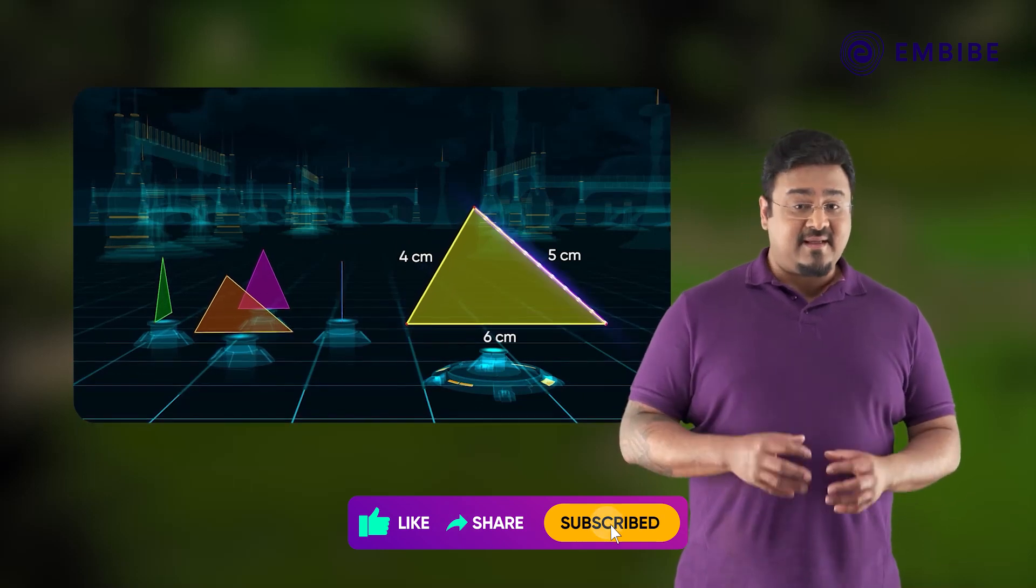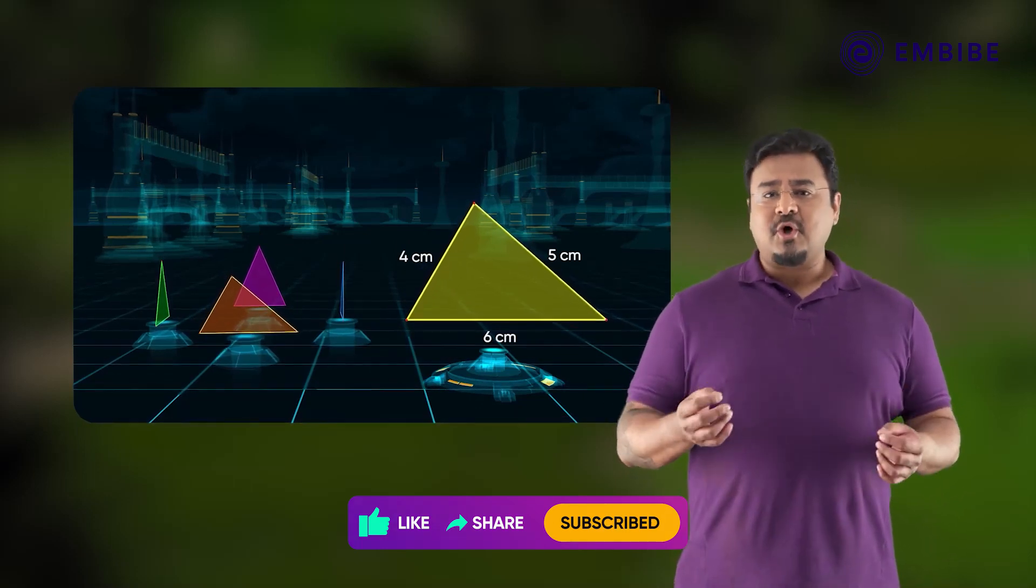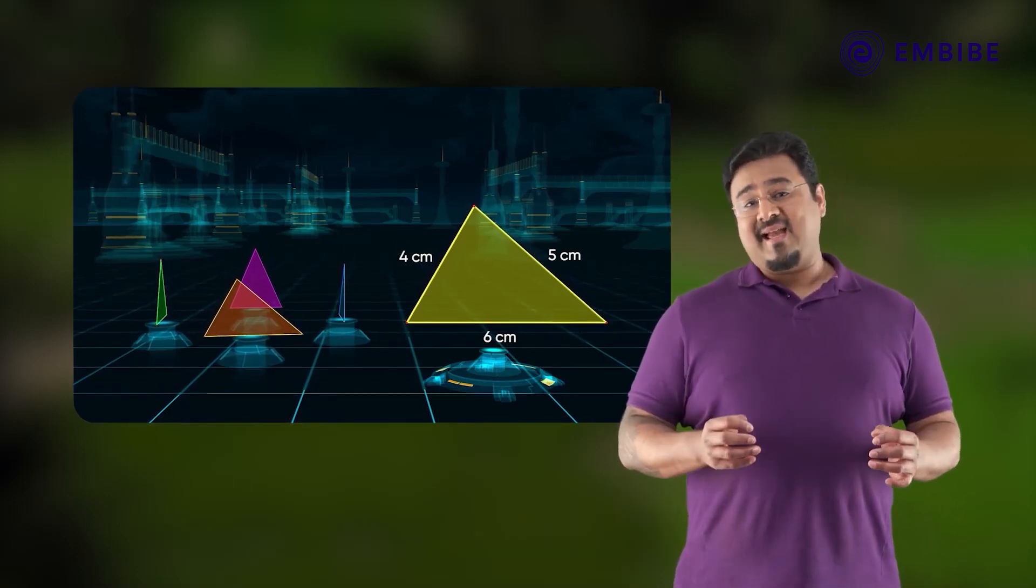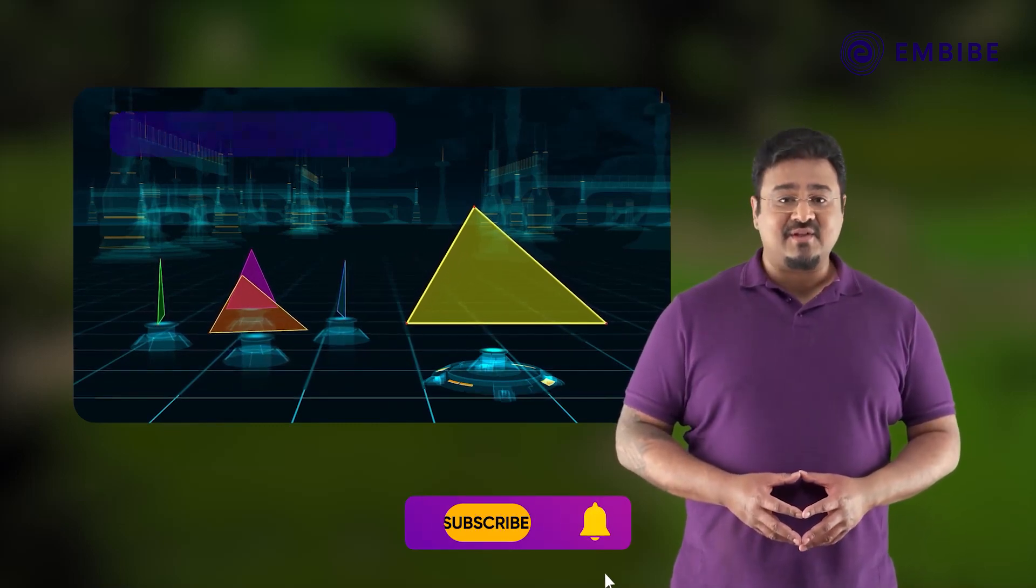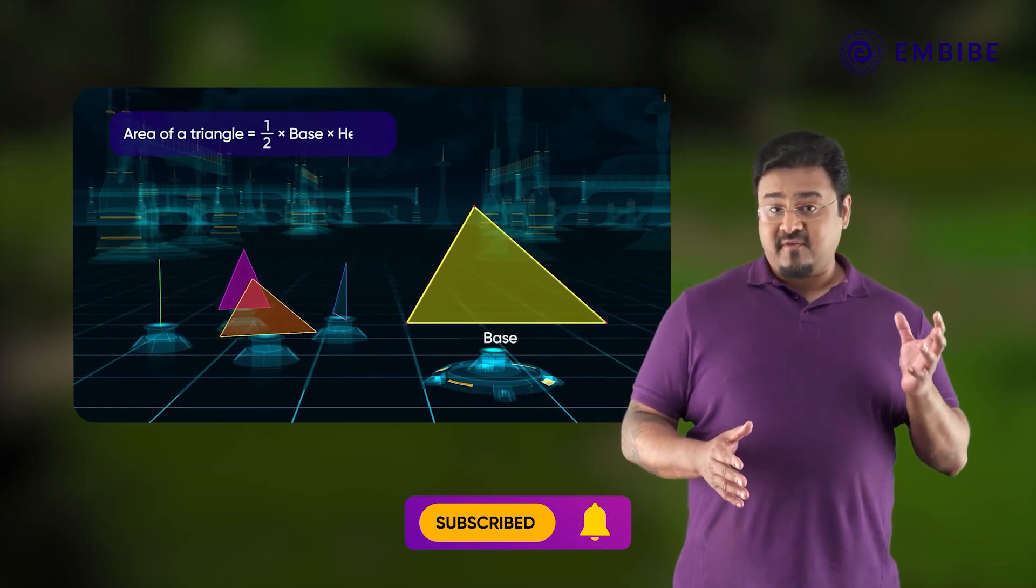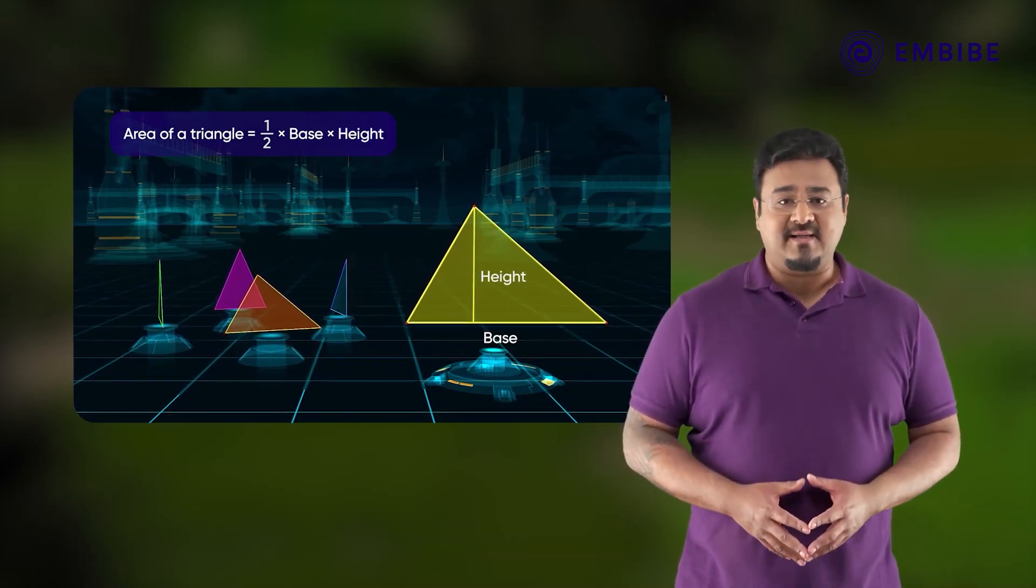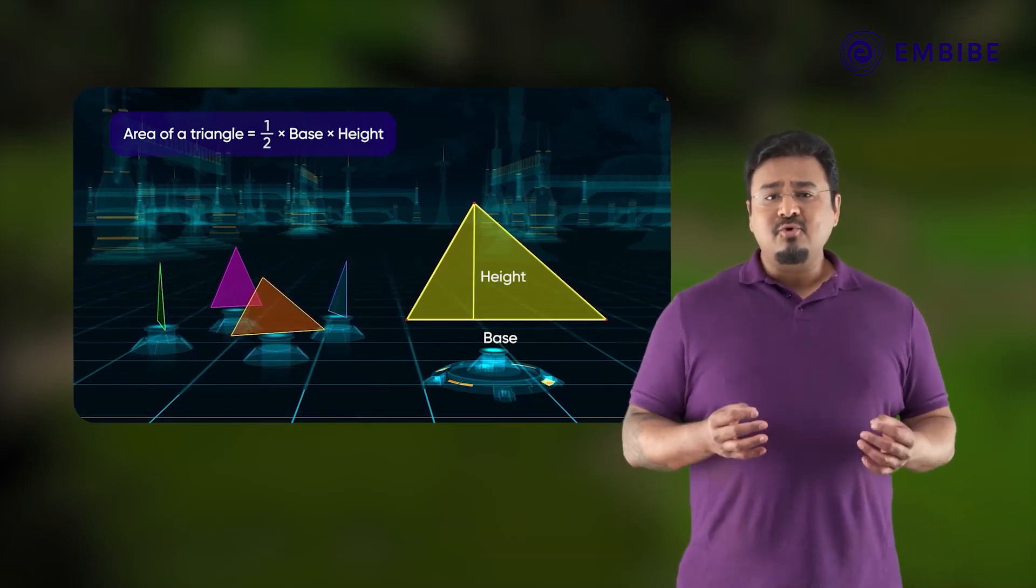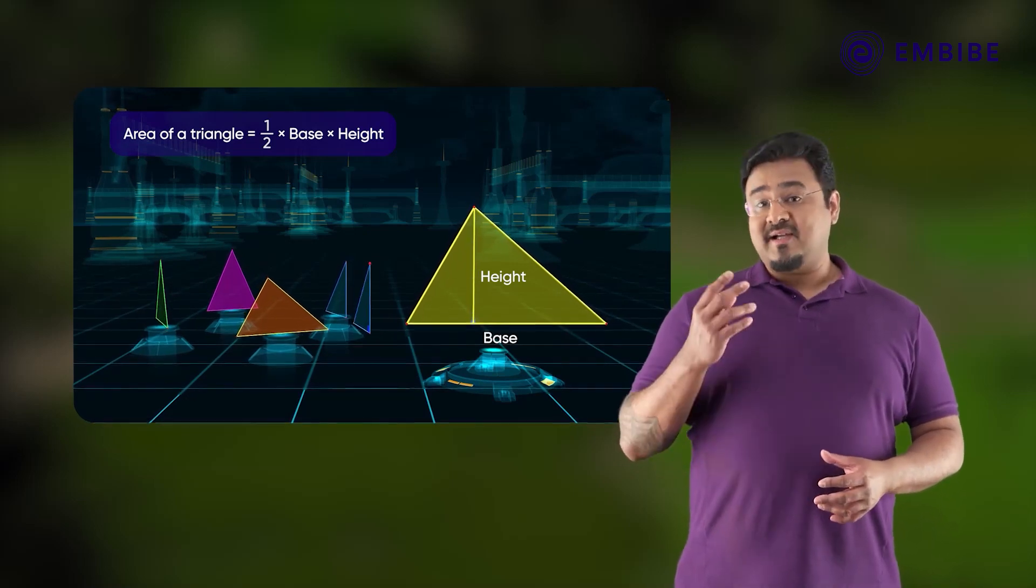In this video we will learn to find the area of a triangle whose side lengths are given. The most commonly used formula to find the area of a triangle is area of a triangle equals half into base into height.